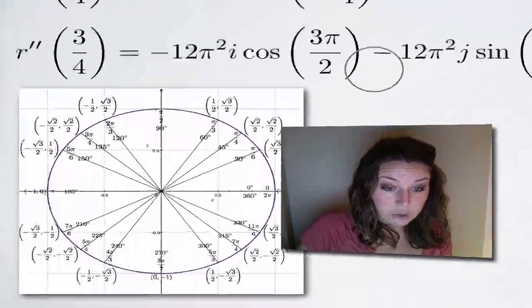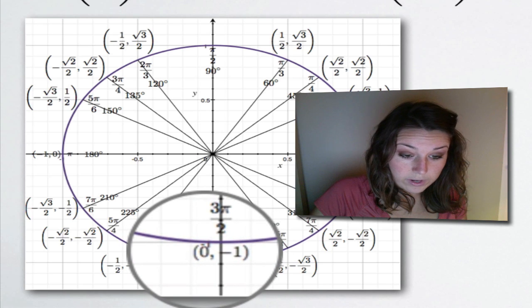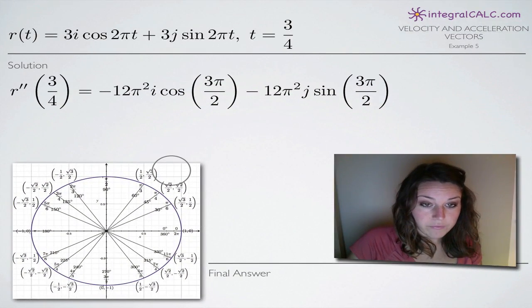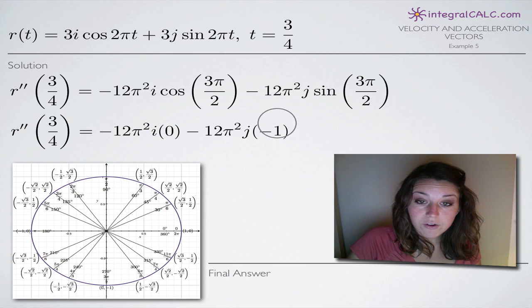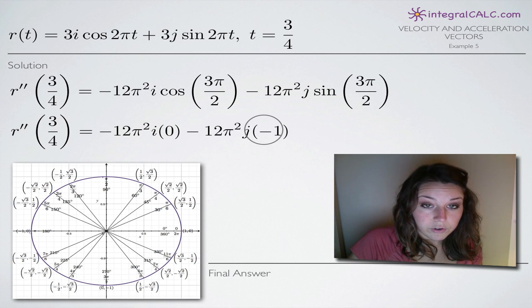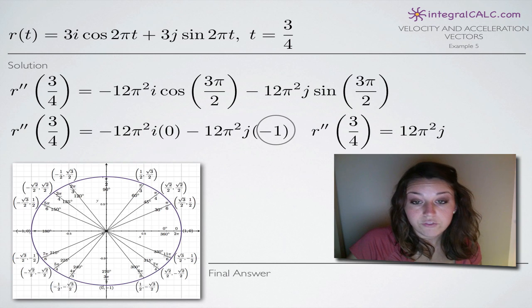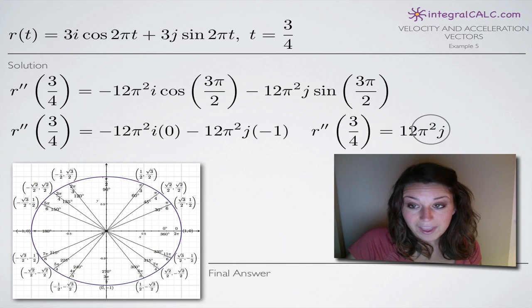Pulling up the unit circle again at angle 3 pi over 2: cosine of this angle is the x-coordinate, which is 0, and sine of this angle is the y-coordinate, which is negative 1. Heading back to our function, cosine of 3 pi over 2 equals 0 and sine of 3 pi over 2 equals negative 1. When we plug those in and simplify, the first term goes away because it's multiplied by 0. In the second term, negative 12 times negative 1 gives us positive 12, so we get 12 pi squared j as our acceleration vector.